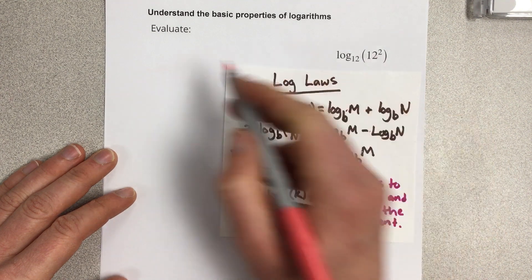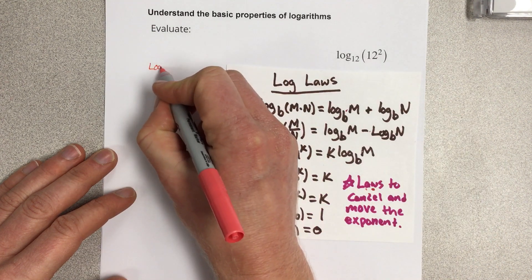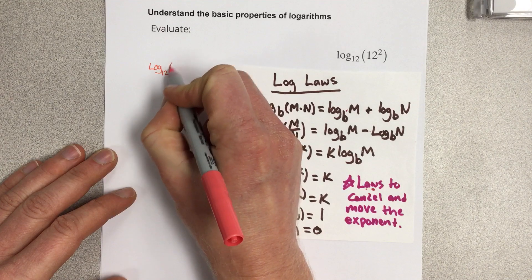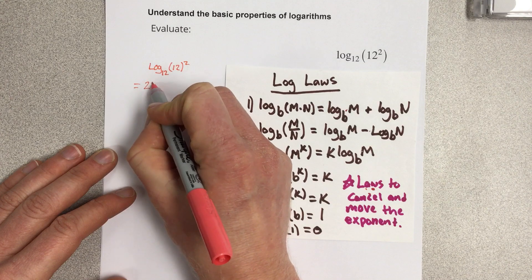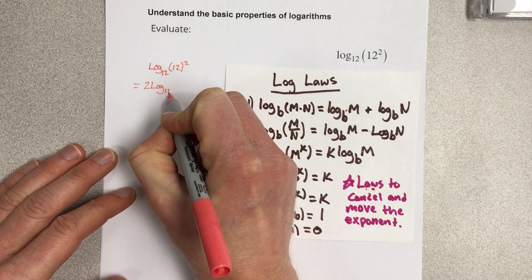So I can move that 2 to the front. I'll start by saying log base 12 of 12 to the second power is the same as 2 log base 12 of 12.